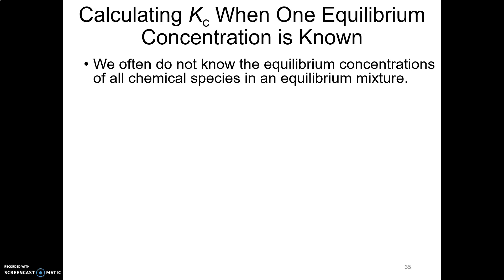But now, what happens when we only know one equilibrium concentration and they're asking us to solve for K? How are we supposed to do that? The only way to handle this is if you're given some additional information.